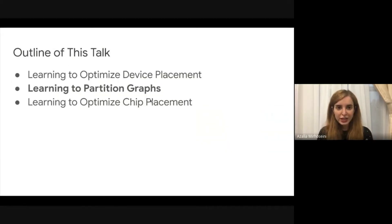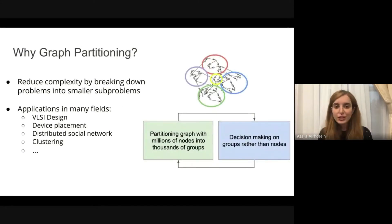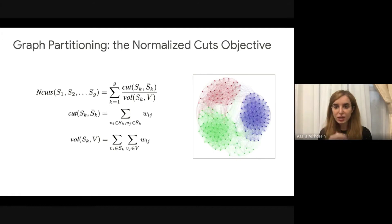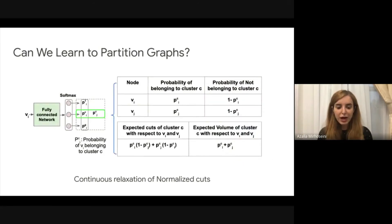Another project we focused on was learning to partition graphs. Graph partitioning is an important problem that appears over and over in systems and chip-related problems. When dealing with graph partitioning, we want to scale down the problem and work on clusters or partitions rather than individual nodes of the graph. A classic approach is optimizing the normalized cuts — partitioning the graph into groups with roughly the same volume or number of nodes, while minimizing the number of cuts across edges between groups. Our approach was to use a learning-based method where we can use context to guide this partitioning.